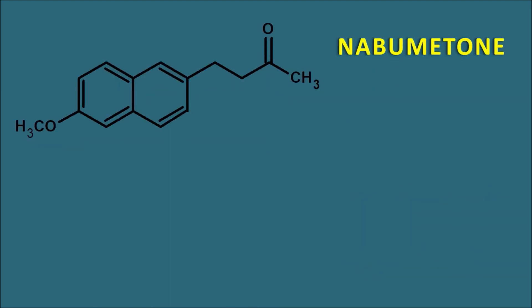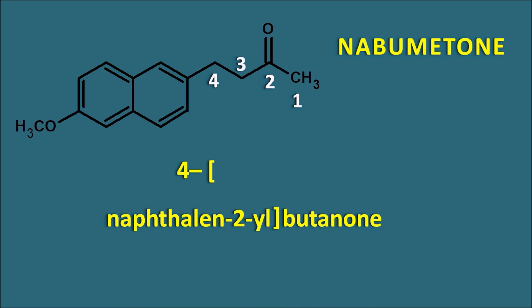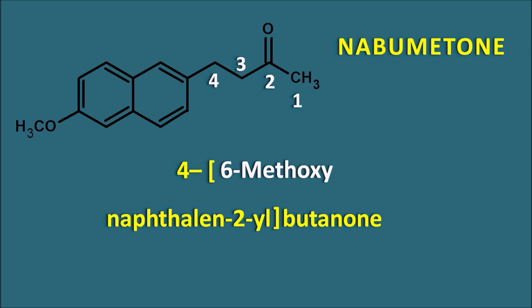The next class is the phenyl alkanone derivatives. One such drug is nabumetone. Since it has no acid functional group, the ketone is the principal functional group. Numbering the chain 1-2-3-4, it is considered a butanone derivative — this butanone chain is attached with a naphthalene ring at the fourth position. The naphthalene ring is attached by its second position, giving 4-(naphthalen-2-yl)butanone. The naphthalene ring also has a methoxy group at the sixth position, so 4-(6-methoxynaphthalen-2-yl)butanone is nabumetone. Nabumetone is structurally similar to naproxen, but naproxen is a propanoic acid derivative whereas nabumetone is a butanone derivative.